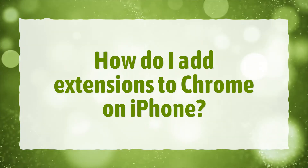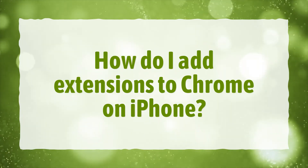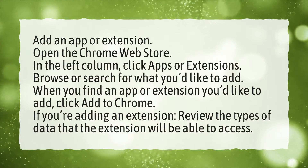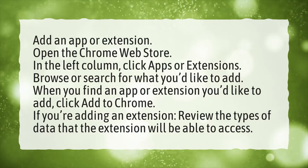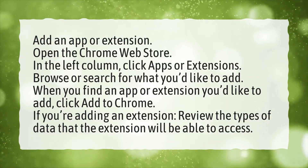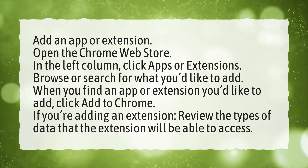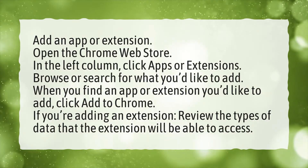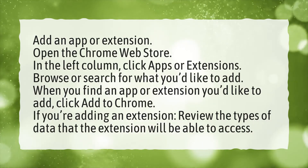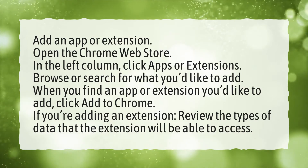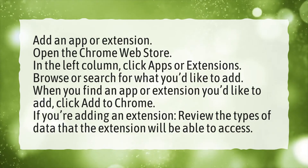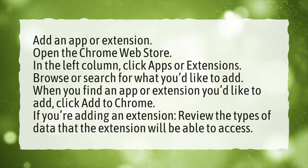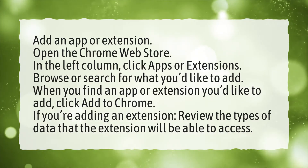How do I add extensions to Chrome on iPhone? Add an app or extension. Open the Chrome Web Store. In the left column, click Apps or Extensions. Browse or search for what you'd like to add. When you find an app or extension you'd like to add, click Add to Chrome. If you're adding an extension, review the types of data that the extension will be able to access.